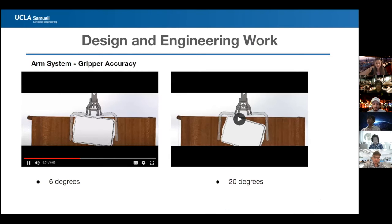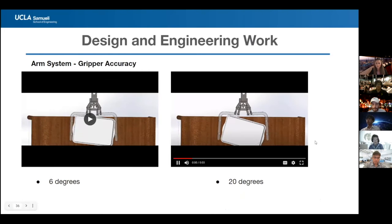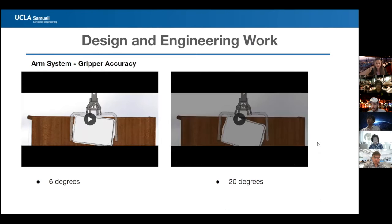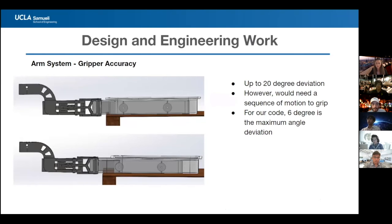Our robotic arm can handle up to 6 degrees of deviation without needing to adjust its position. At 20 degrees of angle, two of the four electromagnets no longer make contact with the metallic strips on the side of the tray.